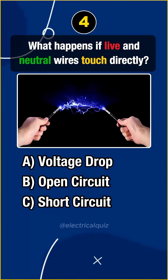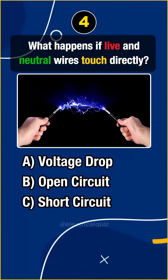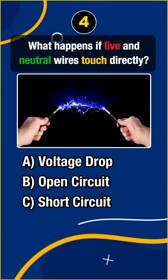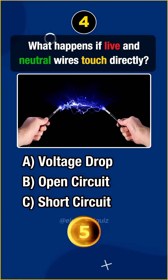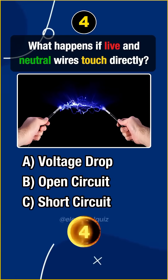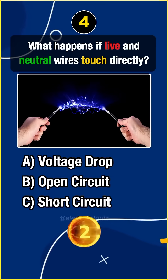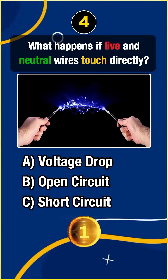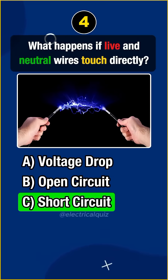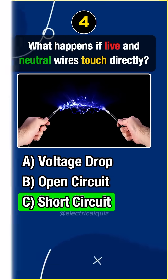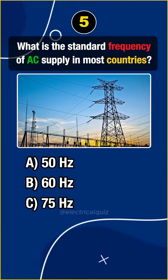Question 4. What happens if live and neutral wires touch directly? Answer C: Short circuit.